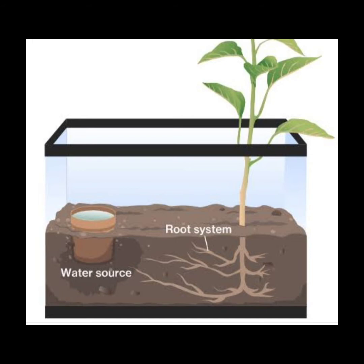Next movement is Hydrotropism — the movement of plants in the direction of water. The root grows towards water, so the root shows positive hydrotropism. The shoot grows away from water, so the shoot shows negative hydrotropism.